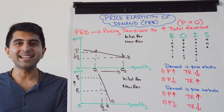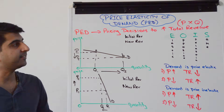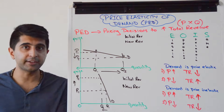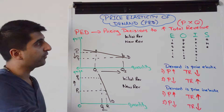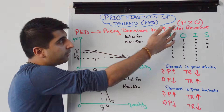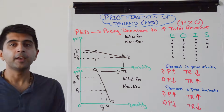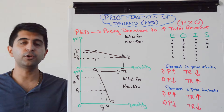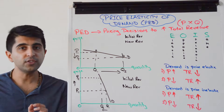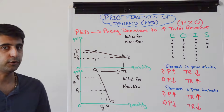Price elasticity of demand is crucial for businesses when making pricing decisions to increase their total revenue. Total revenue is P times Q — the price of a good or service multiplied by the quantity sold. So if a business knows that demand for their good is price elastic or price inelastic, what should they do with price to increase their total revenue?